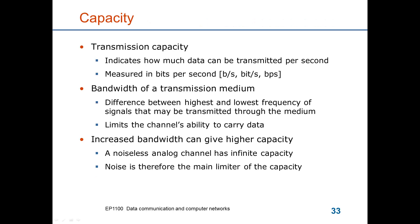The transmission capacity is the ability of a medium to transmit data. It relates to the bandwidth of the medium, which is the distance between the highest and lowest frequency signals that may be transmitted through the medium, often with attenuation of at most 3 dB. This bandwidth limits the channel's ability to carry data. If we increase the bandwidth, or choose a medium with higher bandwidth, we can achieve higher capacity. Without noise, we would have infinite capacity; so noise is the main limiter of capacity.